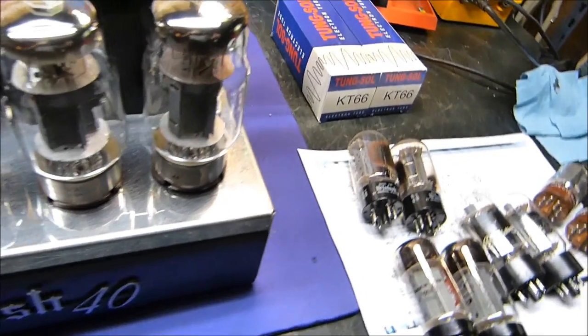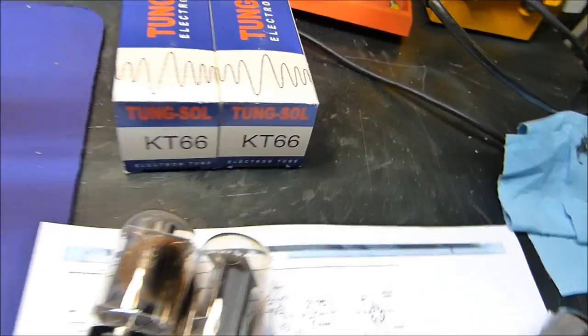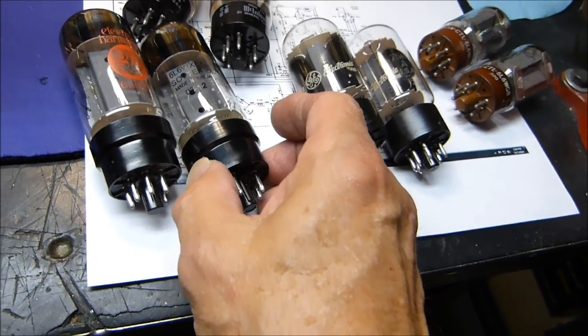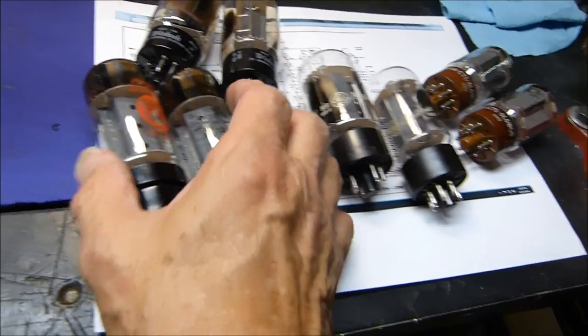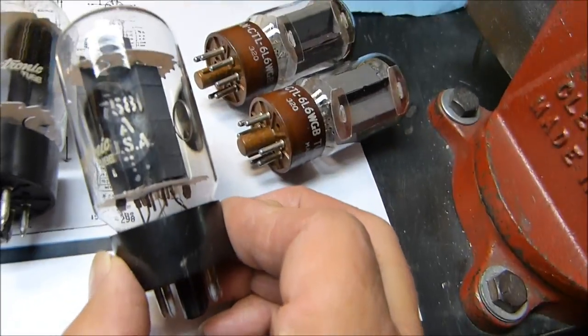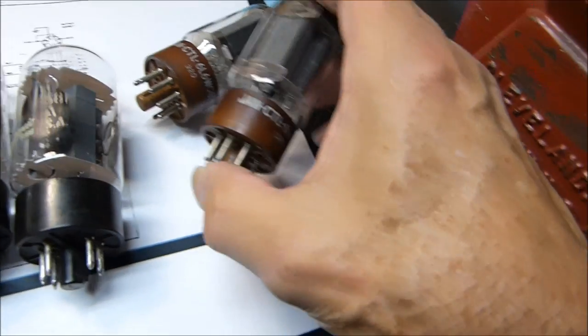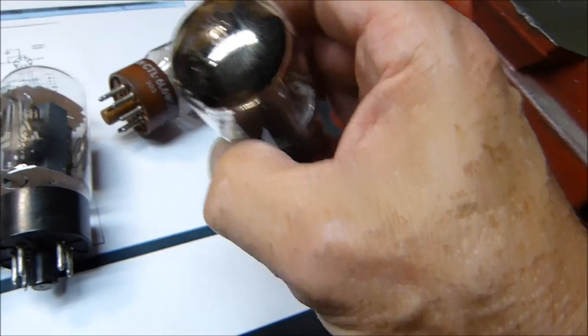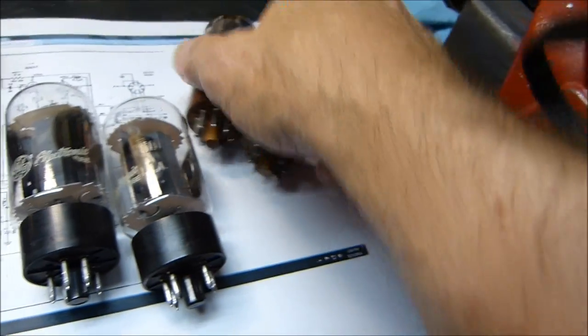These are the Tung Sol KT 66s, new stuff that performed very well. I've got a pair of Electro Harmonix here mixed with a Sovtek that performed very well. Same with these very nice 7581s, a pair of Macintosh branded 6L6s, and these JAN 6L6 WGBs which are also 5881s that perform exceptionally well.